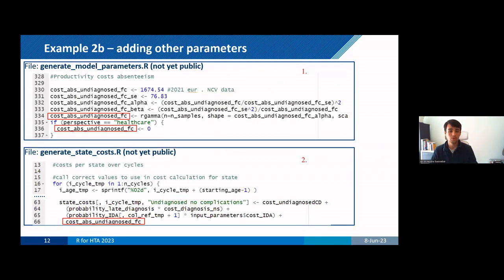But actually, a similar process needs to be followed when you're adding any new parameters. So, for example, here in our approach to doing a societal perspective was also quite similar. But in that case, we just needed to add this new cost categories in the model parameter script and then make the appropriate changes in the state costs, as you can see here. So here, this is for the productivity cost at each cycle. But you would do this for any new parameter that you want to adapt.